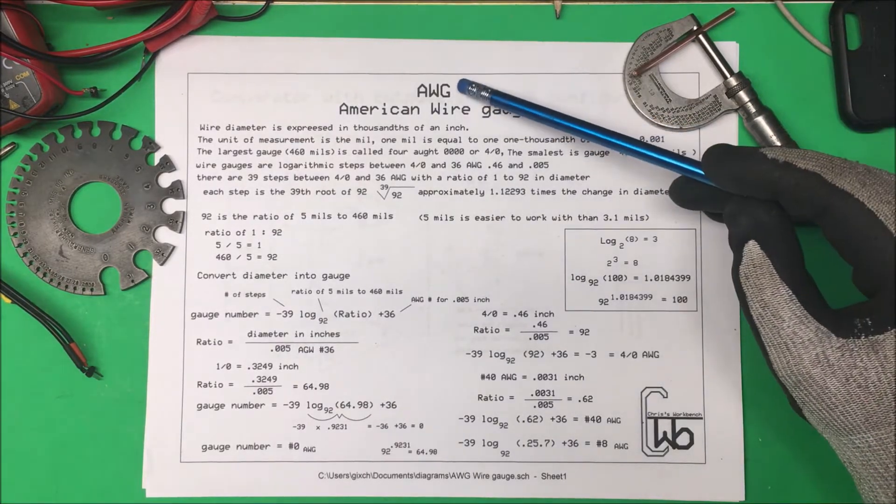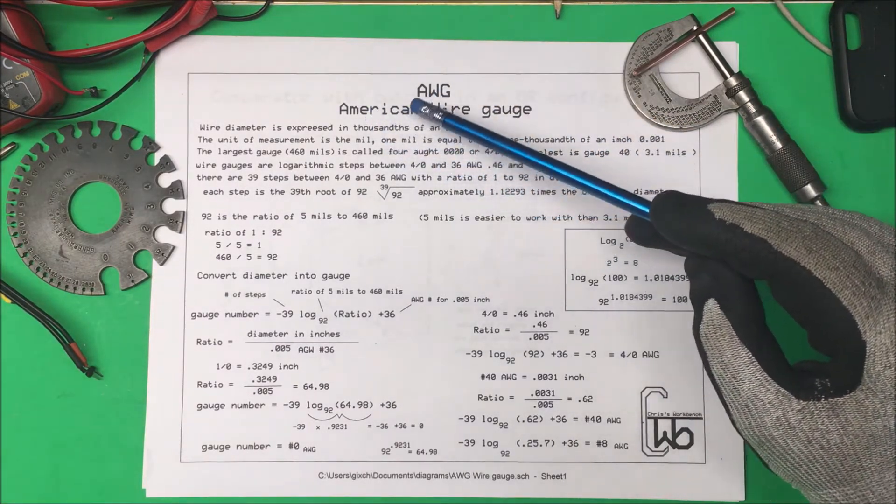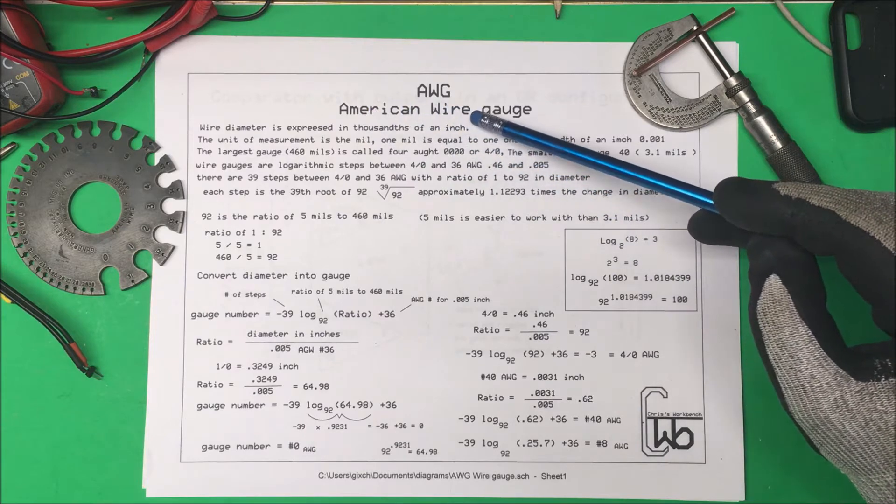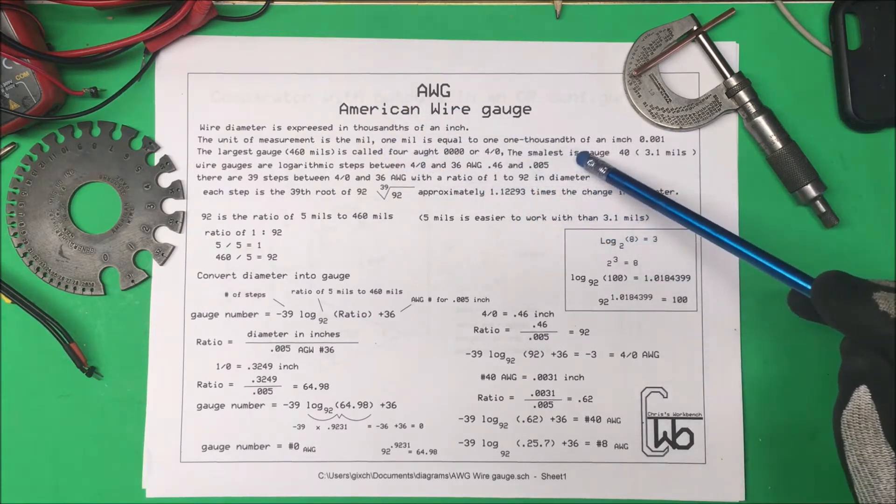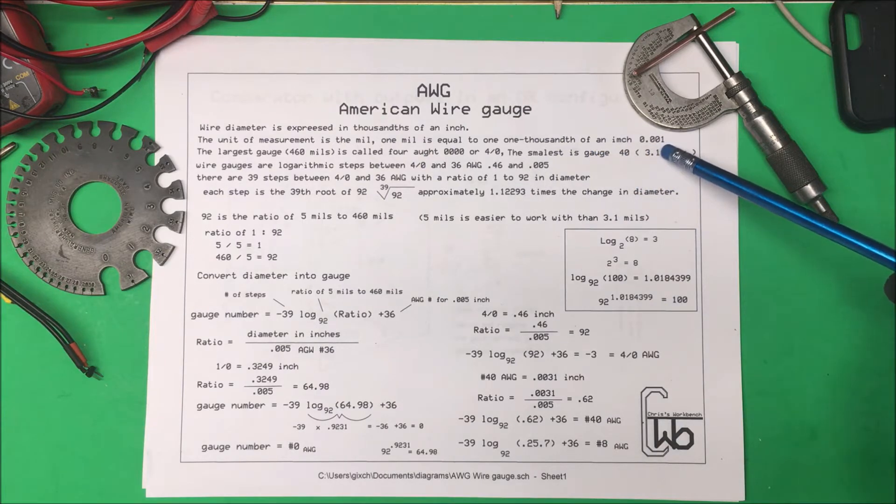Let's take a look at American wire gauge AWG. Wire diameter is expressed in thousandths of an inch and the unit of measurement is a mil. So one mil is equal to one one-thousandth of an inch or .001.